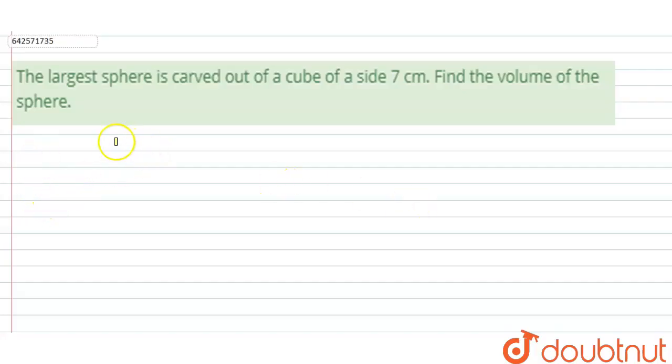Hello everyone, let's start the question. In this problem we have given that the largest sphere is carved out of a cube of a side 7 centimeter. We have to find the volume of the sphere.